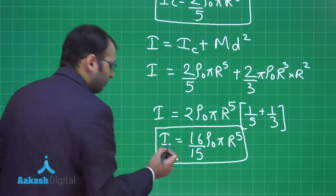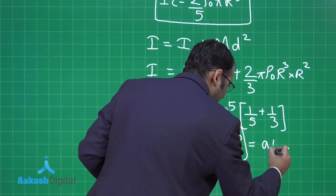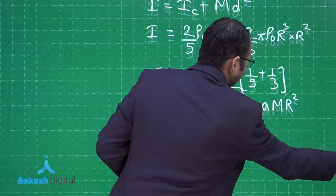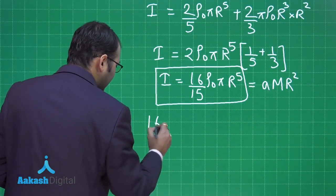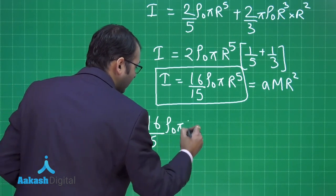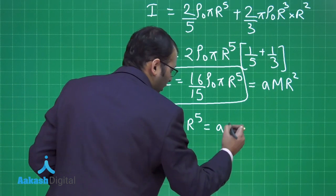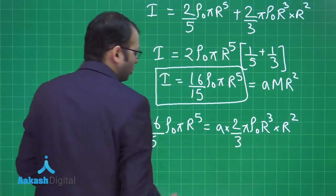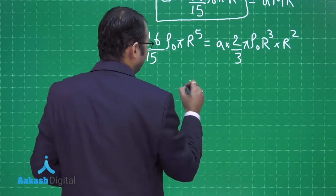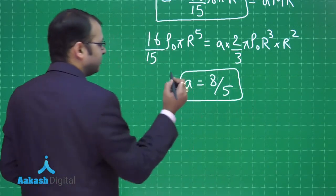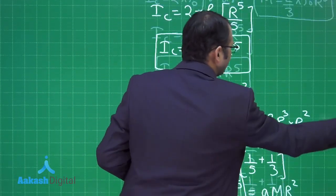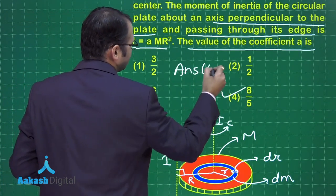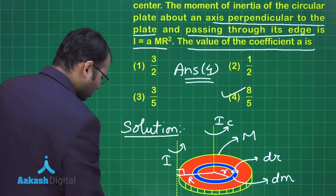So I = (16/15)πρ₀R⁵. The question states I = aMR², so substituting M = (2/3)πρ₀R³: (16/15)πρ₀R⁵ = a·(2/3)πρ₀R³·R². Solving, a = (16/15)·(3/2) = 8/5. Therefore a = 8/5, and comparing with the options, option number 4 is the right answer.